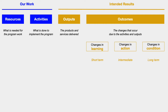The second element is the intended results, depicted in gold, and it's divided into outputs and outcomes. Outputs are the products and services that arise from work activities. Outcomes are the changes that occur due to the program work. Outcomes are defined as three types of changes: user learning, user action, and user condition changes. A condition is the fundamental functioning in the community, including the environmental, social, economic, or civic well-being.